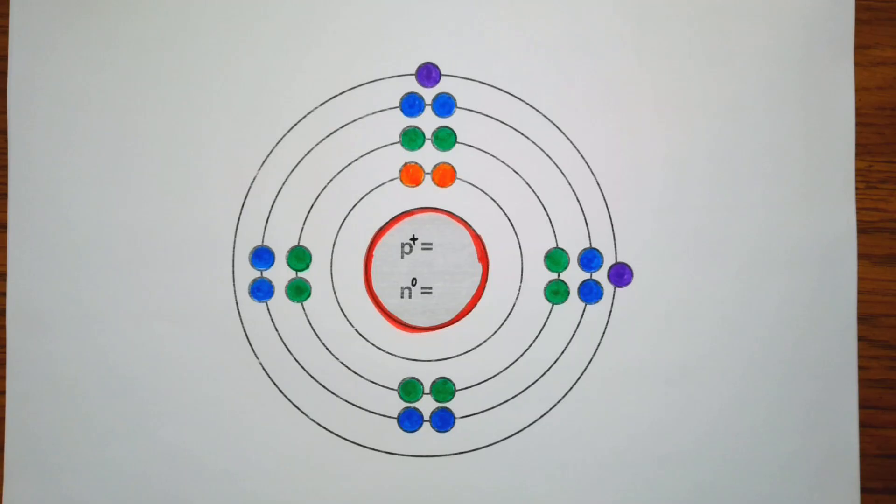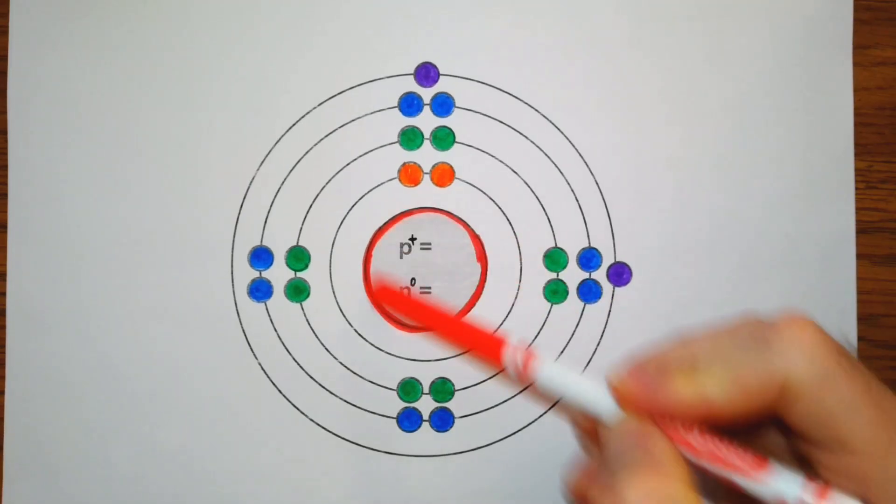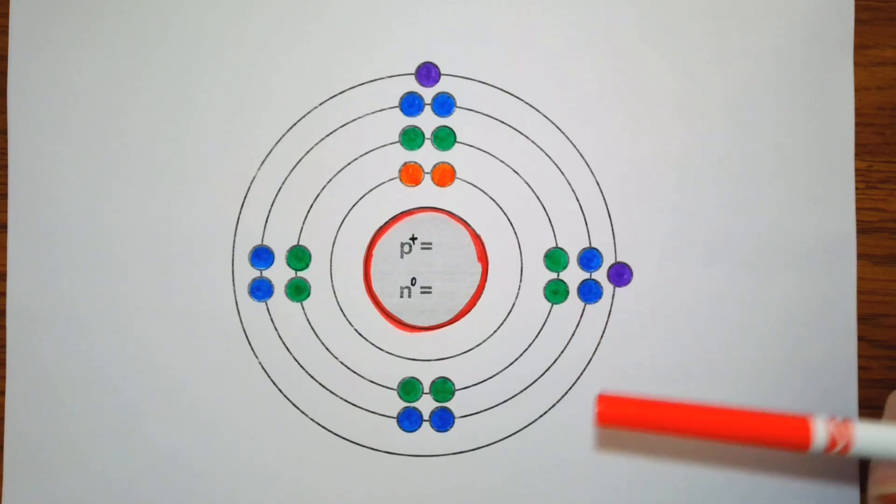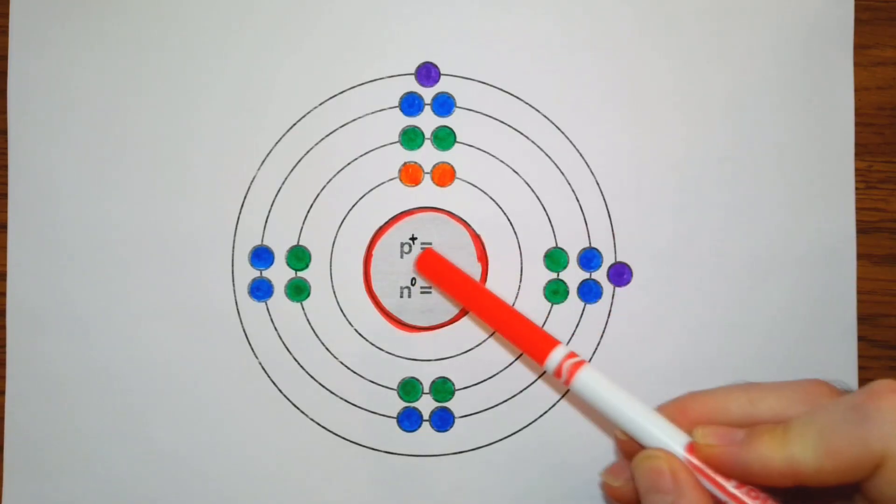When we do a Bohr model, we are going to draw the nucleus, which I have here in red, and then we are going to state how many protons and neutrons are in the nucleus.